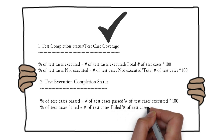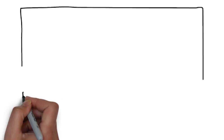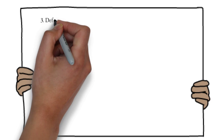The second calculated metric is test execution completion status, which gives information about the status of executed test cases. The pass percentage is found using: (number of test cases passed / number of test cases executed) × 100. Similarly, we can find the fail and blocked percentages using the same approach.